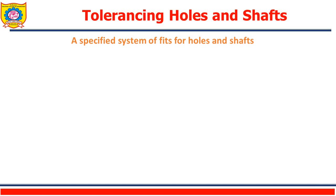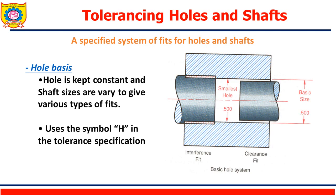So, tolerancing on holes and shafts. There exist two systems: the hole basis system and the shaft basis system, in order to obtain different types of fits. In the hole basis system, the hole is kept constant and the shaft sizes are varied to give the various types of fits. It uses the symbol capital H in the tolerance specification. For the hole basis system I have shown the interference fit and clearance fit as shown in the figure.